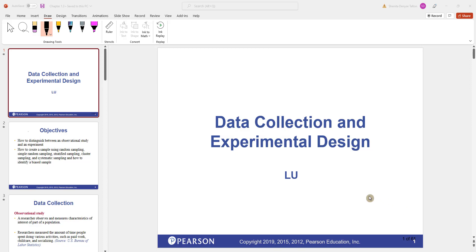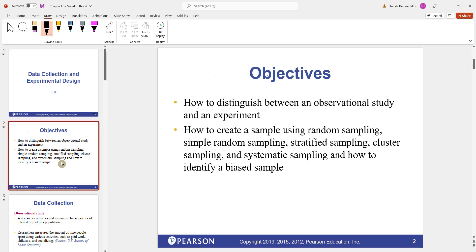In this video, we will talk about data collection and experimental design. We will discuss how to distinguish between an observational study and an experiment, and how to create a sample using random sampling, simple random sample, stratified sampling, cluster sampling, and systematic sampling, and how to identify a biased sample.